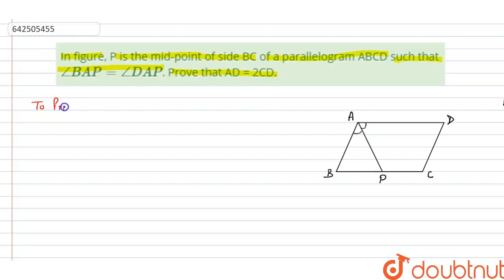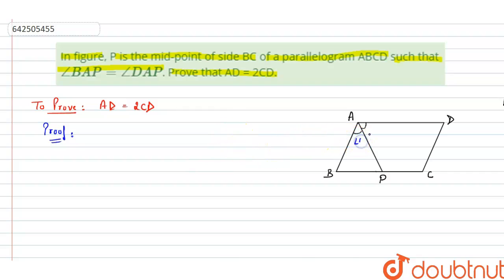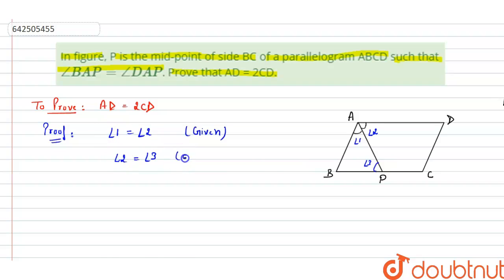So, to prove: AD is equal to twice of CD. Let us start with the proof. As given, angle BAP — let us assume this as angle 1, and angle DAP as angle 2. Angle 1 is equal to angle 2, this is given to us. Let us assume the alternate angle as angle 3. Angle 2 is equal to angle 3 because these are alternate interior angles.